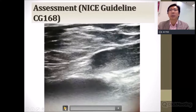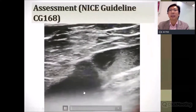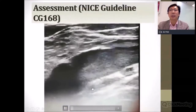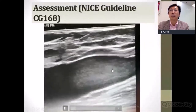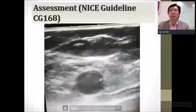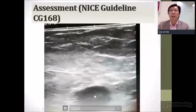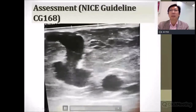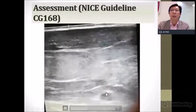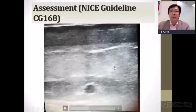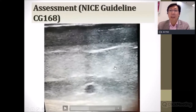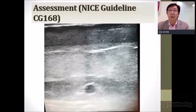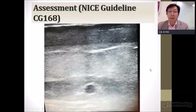On the ultrasound scan, we can see the saphenofemoral junction and the long saphenous vein running down in transverse section along the thigh. You can see branches coming off it. Without doing the ultrasound scan, you will miss these branches, and therefore the outcome of the procedure will not be good — patients will have recurrence almost immediately.